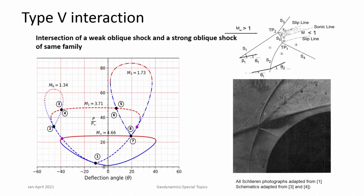Corresponding shock polars can be drawn, and we can understand shock interactions very well with shock polars. This is one application where shock polars can be used to good extent. It is very difficult to solve all these algebraic equations when the system is quite large with many constraints, so if we plot it graphically it is easier to understand them. In type 5 interaction we get a couple of slip lines and a sort of jet that occurs between them.